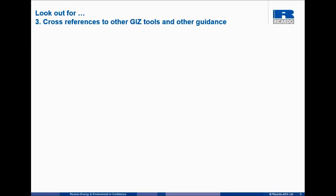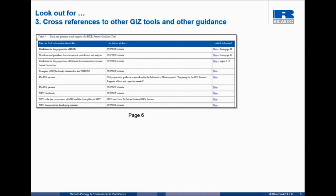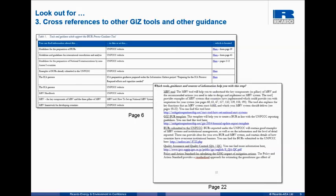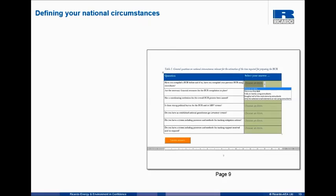There are also cross-references to other excellent GIZ tools and guidance available on the web — here's an example taken from table one, which provides references to UN reporting obligations and also to the MRV GIZ toolkit. At the end of each step, you'll also find a list of sources and information which can help you.